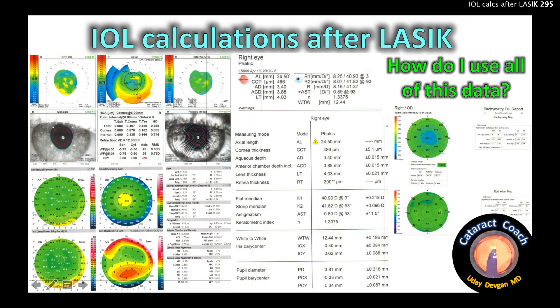Remember that in doing a lens calculation, the three most important issues are: what's the power of the cornea, what's the axial length of the eye, and what's the effective lens position. Prior LASIK is not going to change the axial length, so that's fine, but it most definitely changes how our machines measure and read the cornea, and it can also change how some formulas calculate the effective lens position.